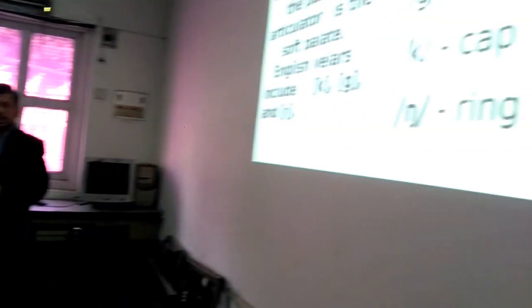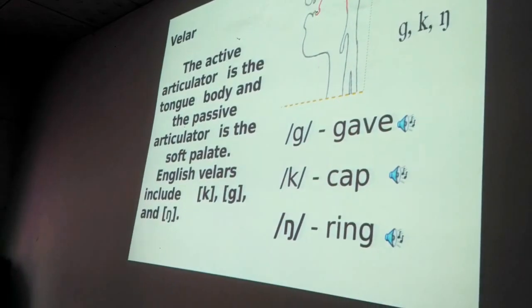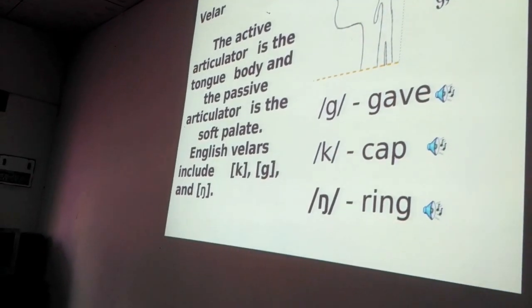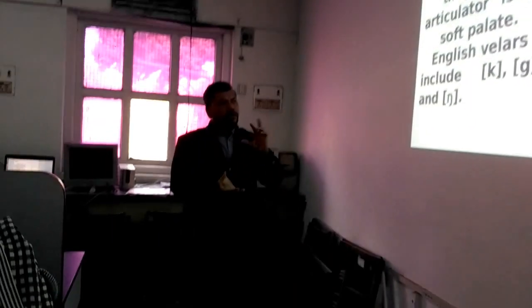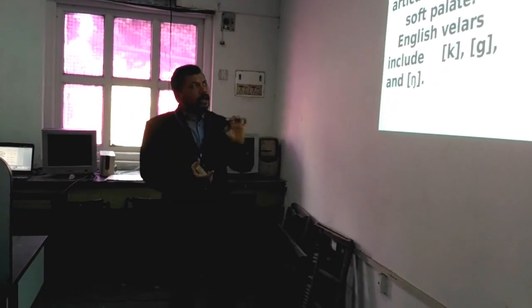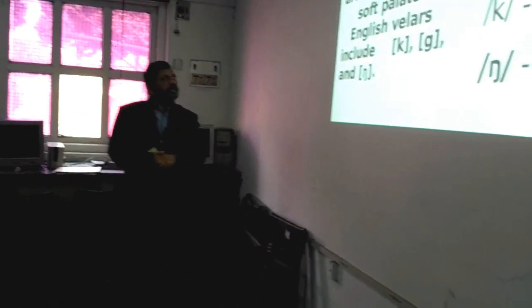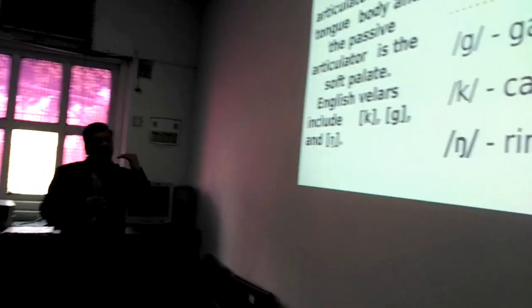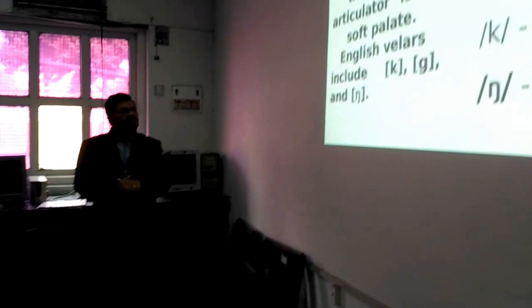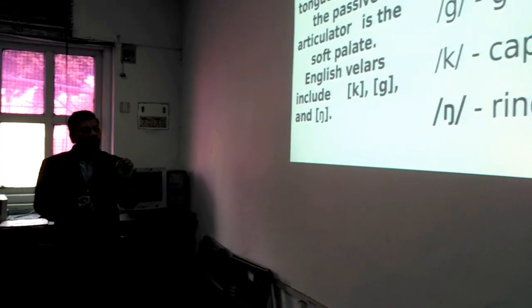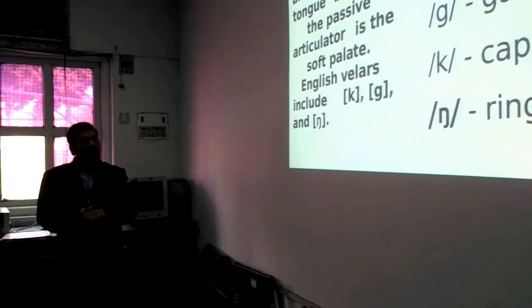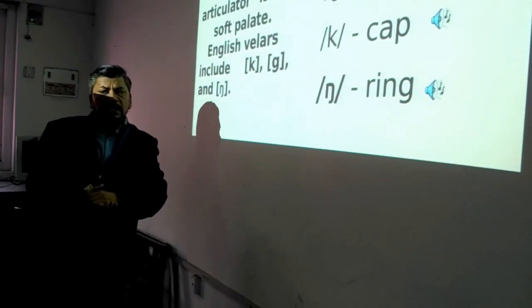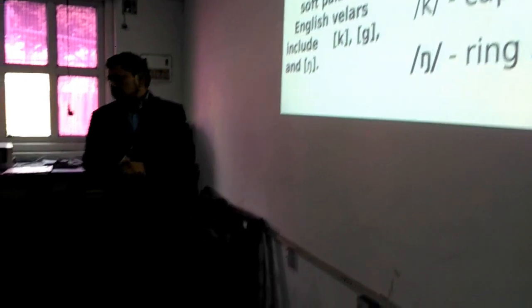Next sound is velar. Velar sound includes K, G, and NG. Active articulator is the tongue body and the passive articulator is the soft palate. English velar sounds include K, G, and NG. G as in cave, K as in cap, NG as in ring.